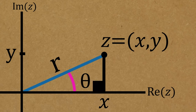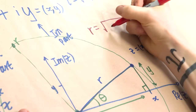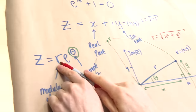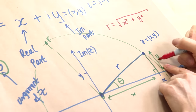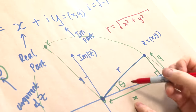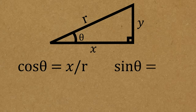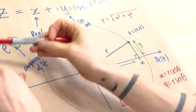We draw a triangle: drop a perpendicular to create a right angle. The horizontal distance is x, the height is y, and the diagonal is r. Pythagoras' theorem gives us x squared plus y squared equals r squared, so r equals the square root of x squared plus y squared. Then trigonometry tells us: cos of theta equals x over r, and sine of theta equals y over r. So x equals r·cos(theta) and y equals r·sin(theta). We now have these relationships between x, y, r, and theta.